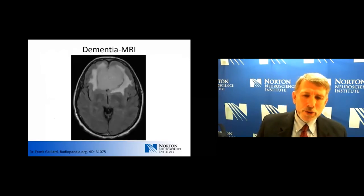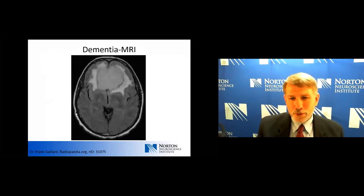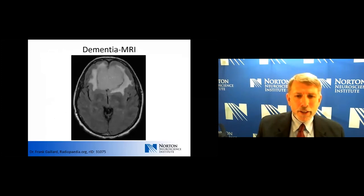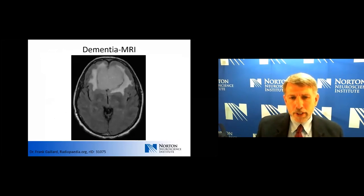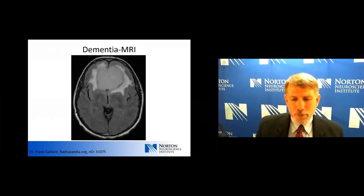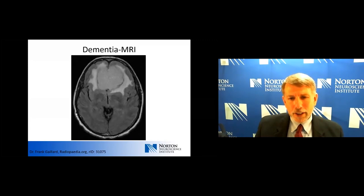Why do we do imaging? The simple answer is we're looking for evidence of tumor or vascular disease. This MRI shows a meningioma — probably a couple times a year I'll see someone with a meningioma impacting the frontal lobes in such a way that the only symptom is gradually progressive cognitive decline. If we see and recognize this, at the very least we can halt that decline and in some cases reverse it. So that's important not to miss.